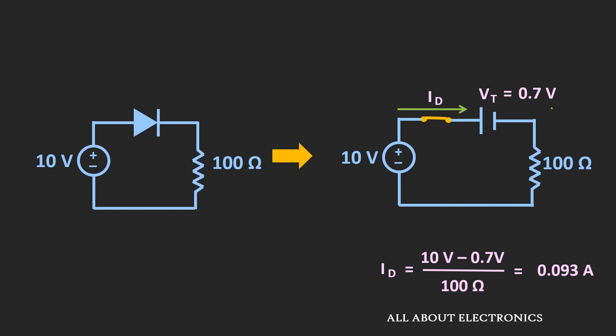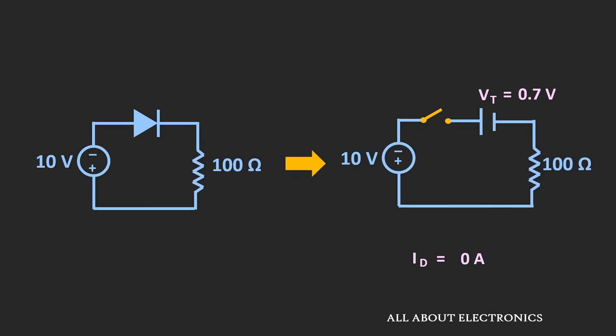Let's take the same example as before. In this approximation, the diode allows current only after the applied voltage crosses the threshold voltage. Using a silicon diode with a threshold voltage of 0.7V: since the applied voltage is 10V, the diode allows current. The current through the 100Ω resistor is (10V – 0.7V) ÷ 100Ω = 0.093A. Compared to the ideal diode result of 0.1A, this approximation gives more accurate values. When we apply –10V, the circuit acts as an open switch and current is 0A.